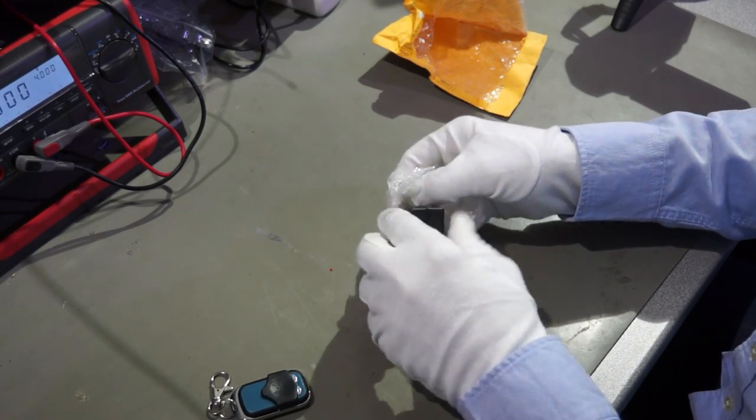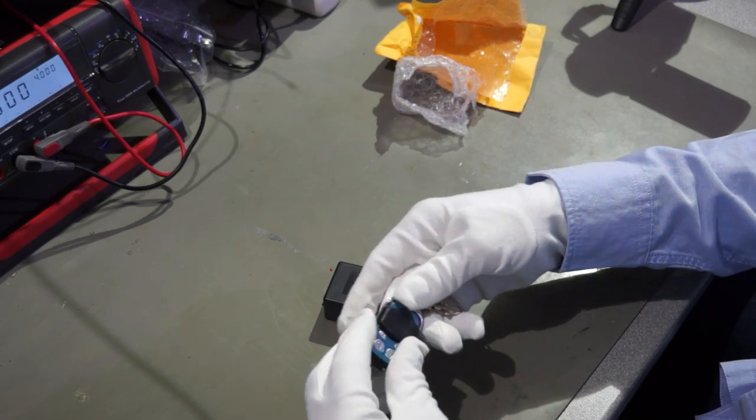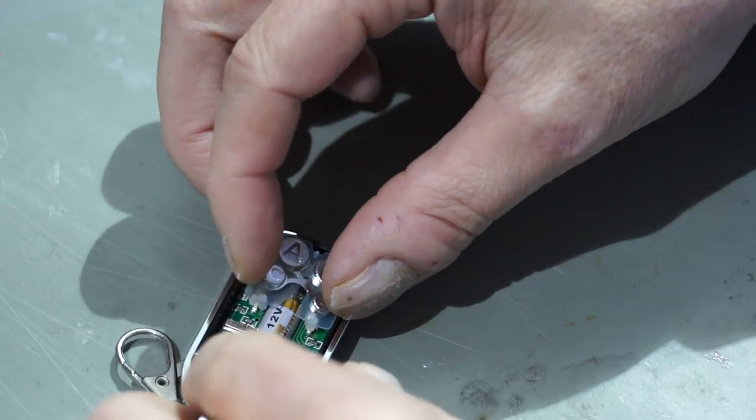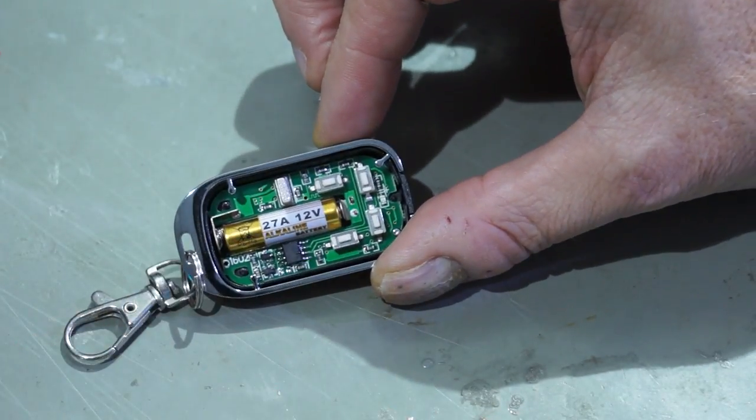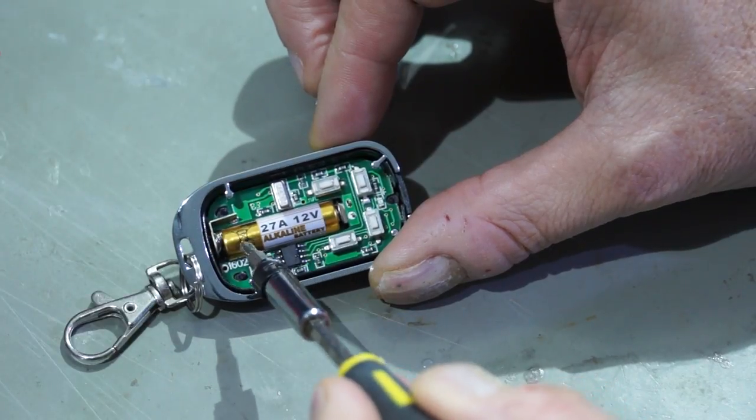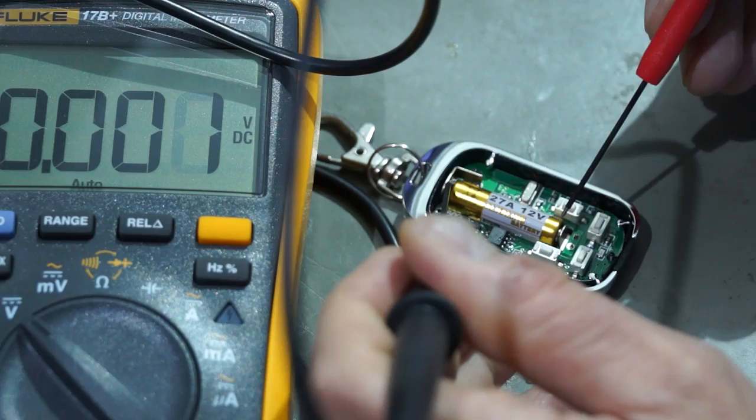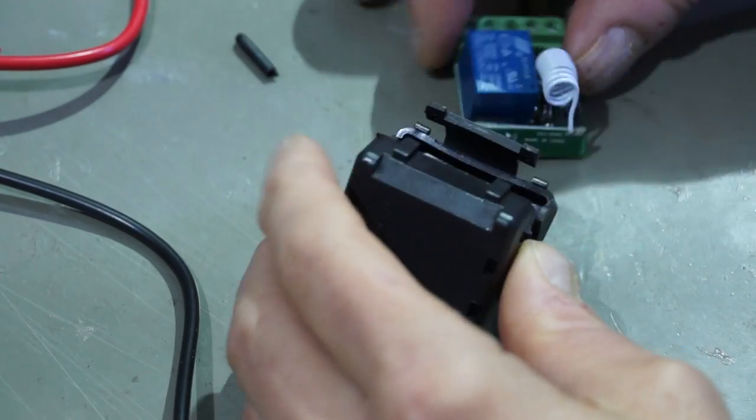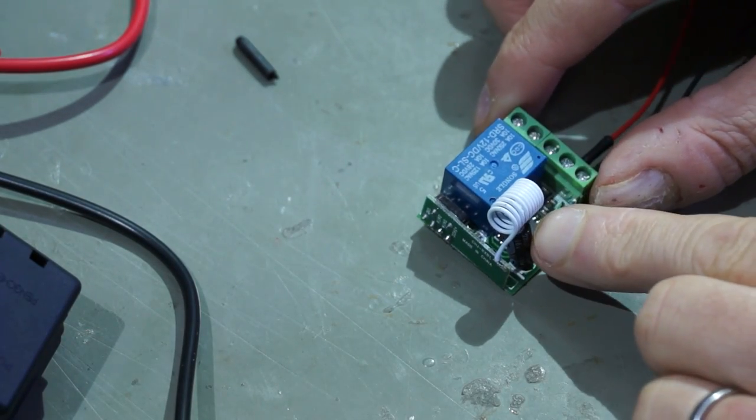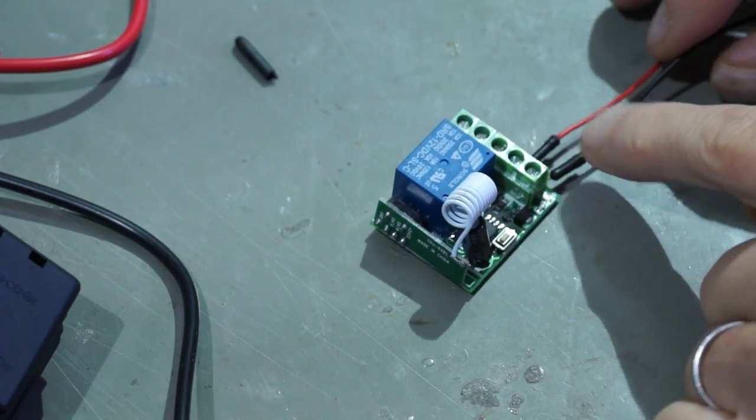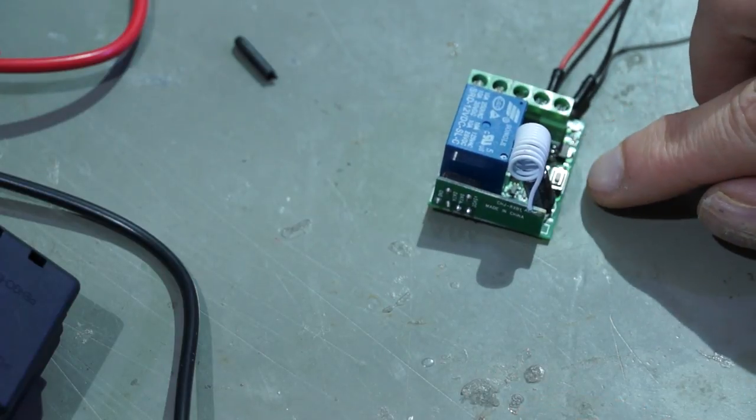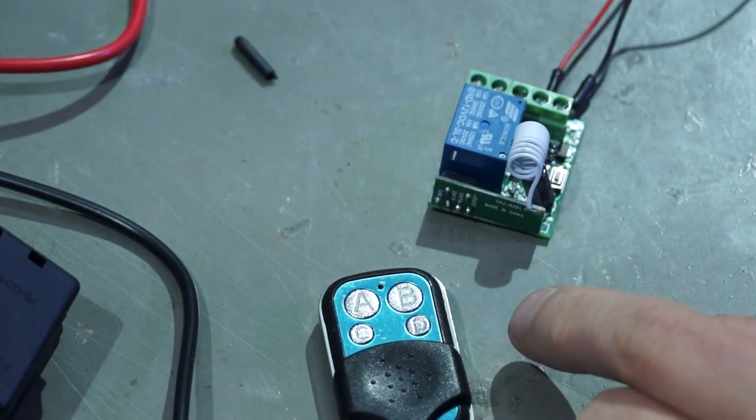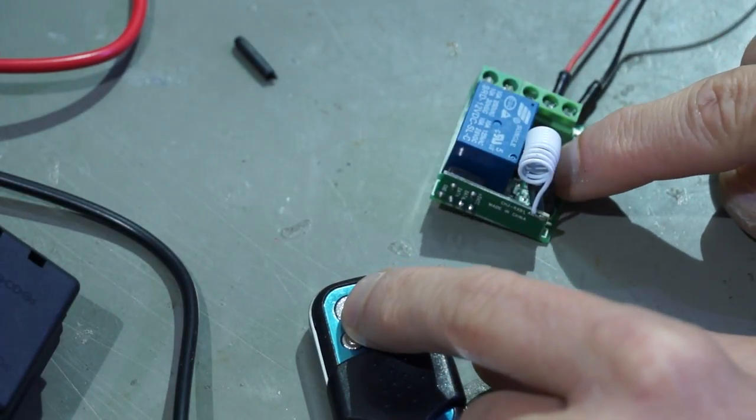This is a 433 MHz remote control. So I open the remote control. And we see it has a 12 volt battery. Never seen such a battery. But it is interesting. It is still completely full. The receiver is in this box with the antenna here and the connection. And I already connected it to 12 volt. There is a small button here. And to learn which of the four buttons will actuate the relay here, we have to program with this button.